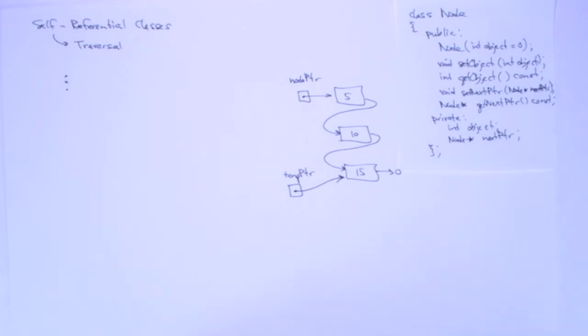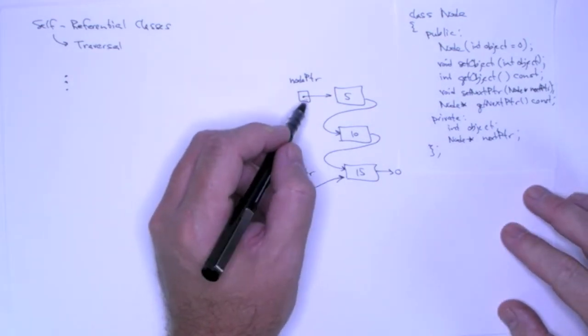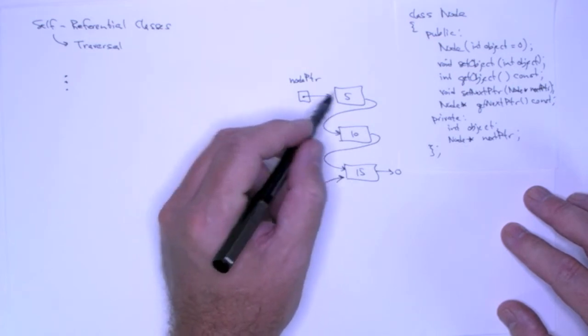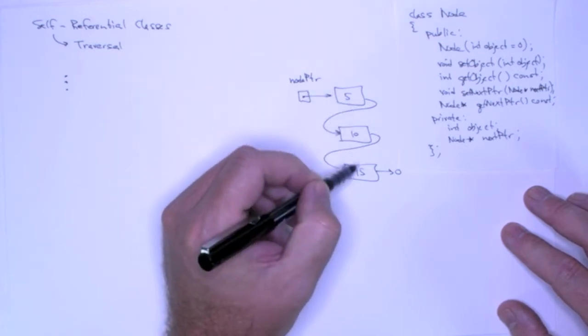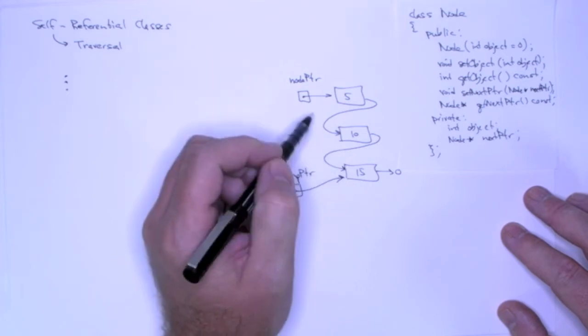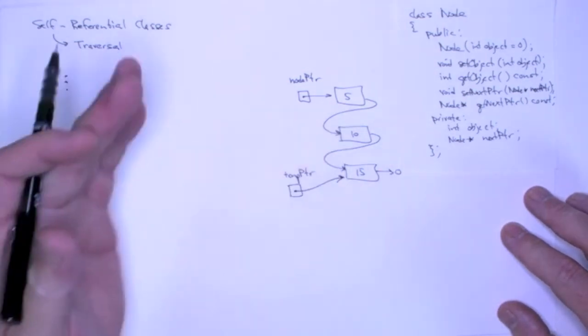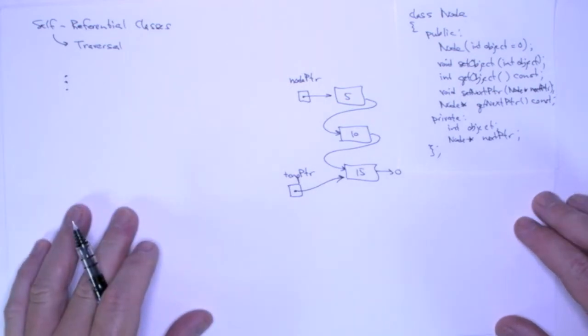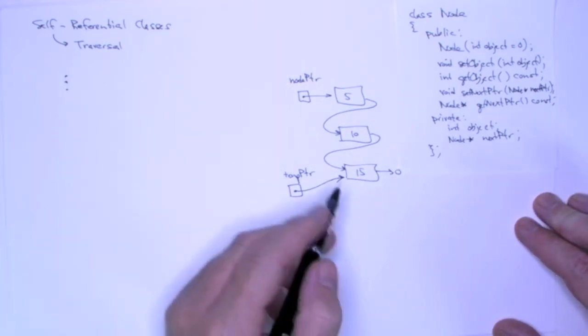And now what I'm going to do is I'm going to traverse this list. We did it in a brute force fashion. Now I'm going to do it a little bit more elegantly using a loop. This code fragment will work for any linked list assuming it's properly constructed. And then we'll see the output down here.